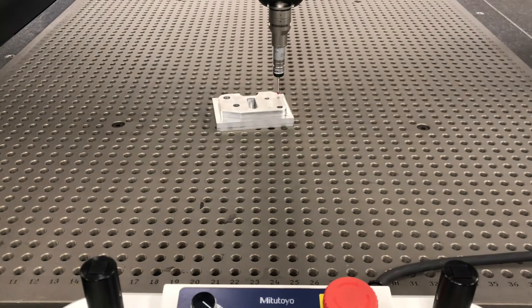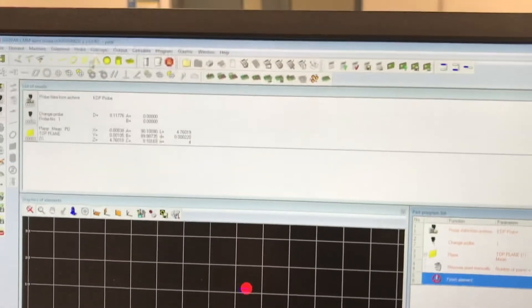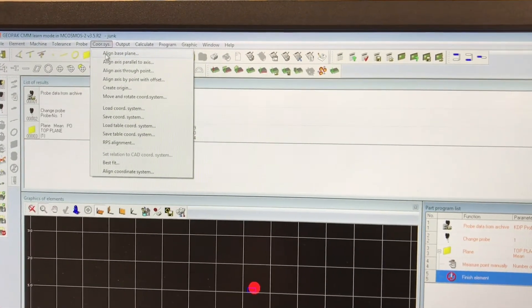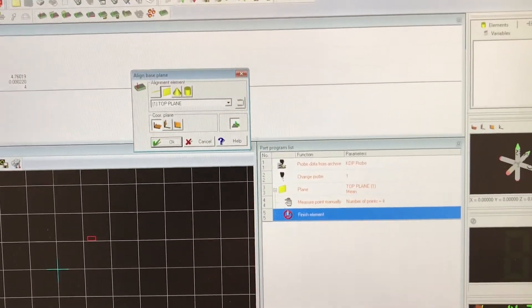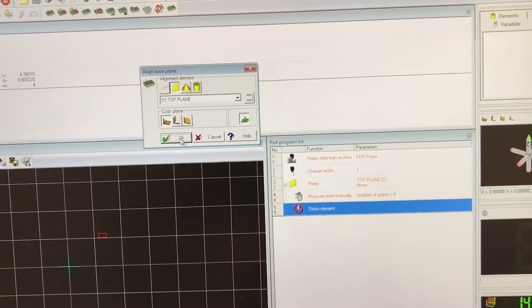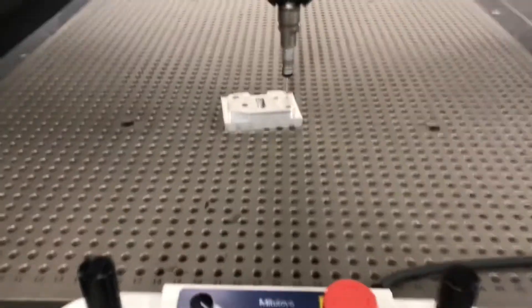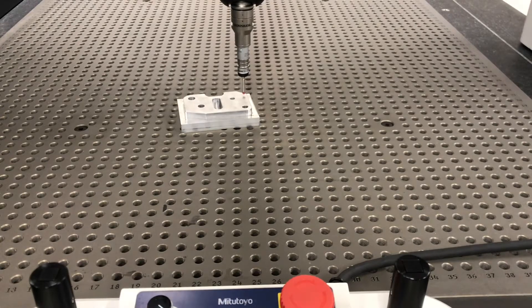So what we want to do, we want to come over here to the mouse coordinate system. Align the base plane. What are we going to align? The top plane. So we have just made that our top plane. Basically like our Z on a CNC mill. So now I want to click on align.